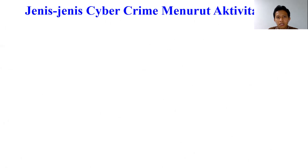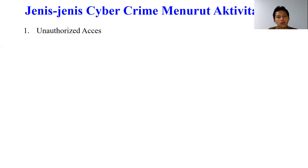Kemudian jenis-jenis cybercrime menurut aktivitasnya. Yang pertama adalah unauthorized access, yaitu kejahatan yang terjadi ketika seseorang memasuki atau menyusup ke dalam suatu sistem jaringan komputer tanpa izin, atau tanpa sepengetahuan dari pemilik sistem jaringan komputer yang dimasukinya. Contohnya adalah probing dan port scanning.